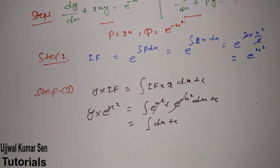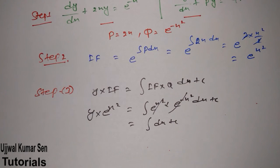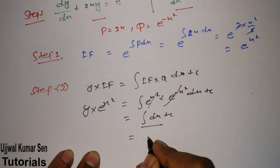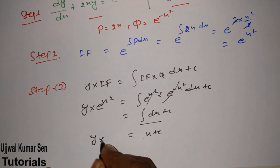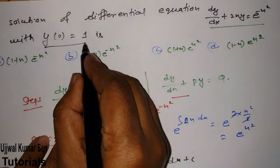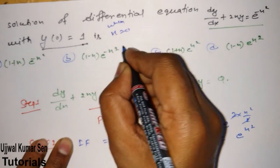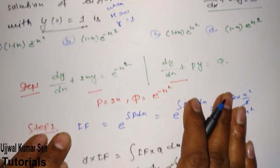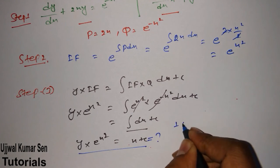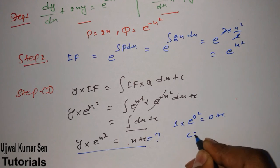This is really easy — it is a 12th standard result. Integration of dx gives x + C. So we have y times e to the power x squared = x + C. Now apply the condition: when x = 0, y = 1. Put these values in: 1 times e to the power 0 = 0 + C. So C = 1.